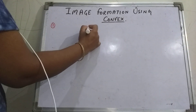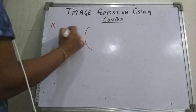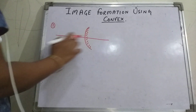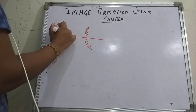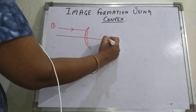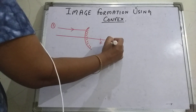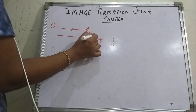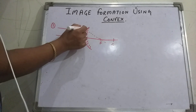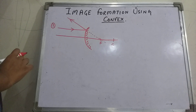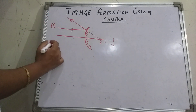First rule: draw the principal axis. When a ray is parallel to the principal axis — because focus is imaginary — it is assumed that the ray appears to be reflected back from the focus.